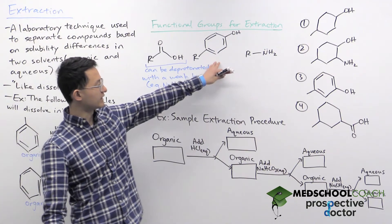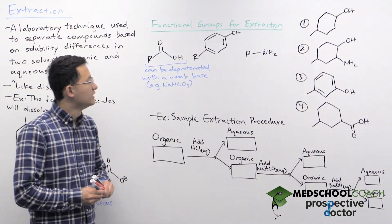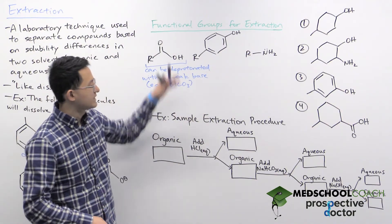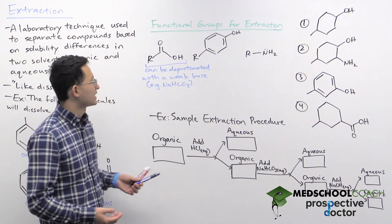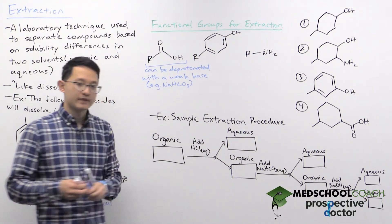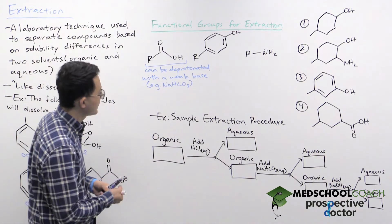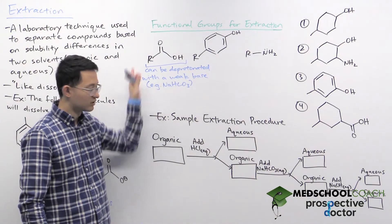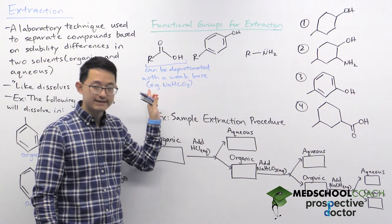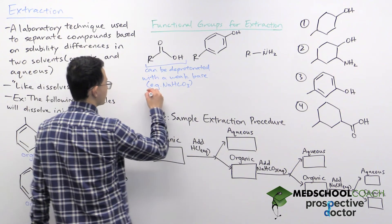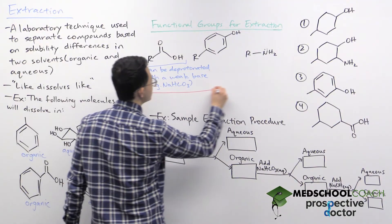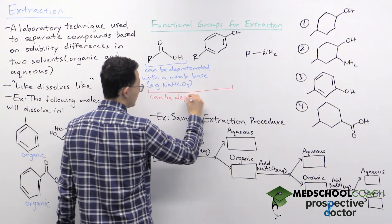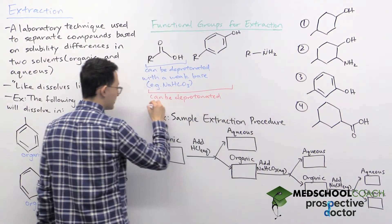The phenol has a hydrogen that is slightly acidic, but it's not as acidic as the carboxylic acid, so it can't be deprotonated by a weak base. However, a strong base can deprotonate the phenol. Note that if a weak base can deprotonate a carboxylic acid, a strong base definitely can also deprotonate the carboxylic acid. So both the carboxylic acid and phenol can be deprotonated with a strong base.